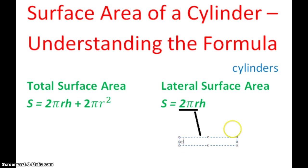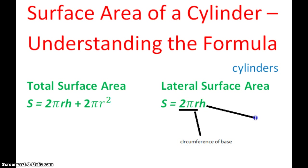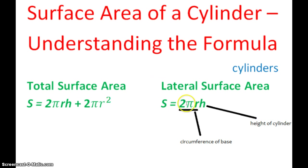We'll label that circumference of the base, and then the h represents the height of the prism — or specifically, the cylinder. So for lateral surface area: find the circumference of the circular base and multiply it by the height of the cylinder.